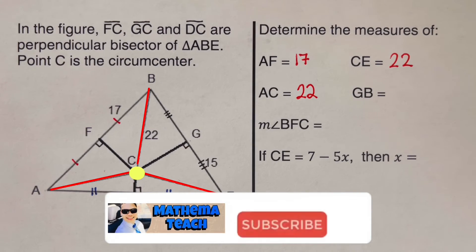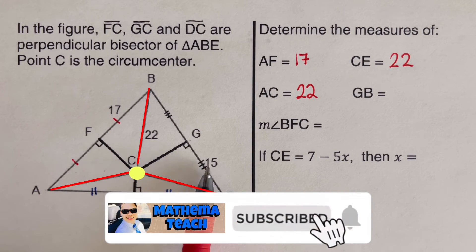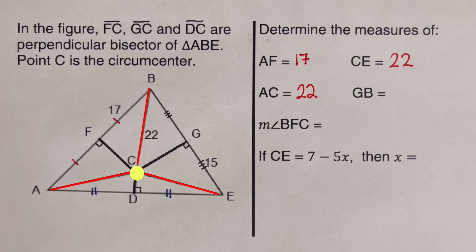And then we're looking for GB. So GB is on the side right here. Since this is 15, this side would also be 15.